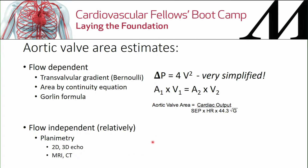Getting back to the flow dependence of your measurements: the simplified Bernoulli equation — measuring velocity and using 4v² to get the peak instantaneous gradient — is probably the most dependent on flow. The continuity equation states that area times velocity at one point must equal area times velocity at a downstream point. The Gorlin formula, used in the catheterization lab, actually measures pressures in the left ventricle and aorta but estimates cardiac output, so it is also fairly flow dependent. Less flow dependent are planimetry techniques, either 2D or 3D by echo, MRI, or CT.